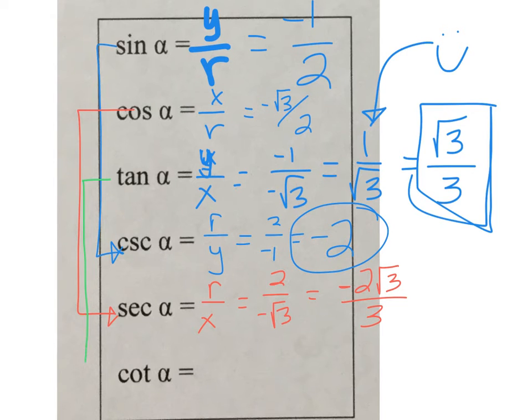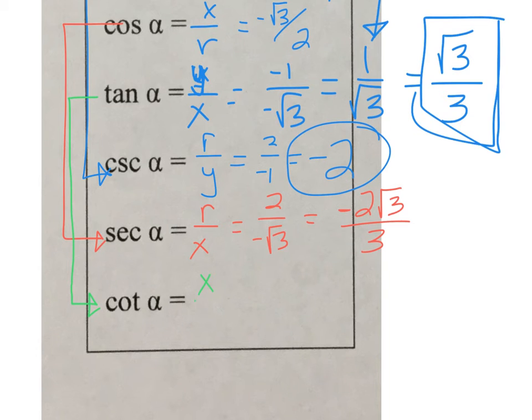The cotangent is the reciprocal of the tangent, so cotangent is x over y, which is negative root 3 over negative 1. So our cotangent value is just root 3.